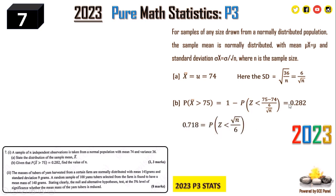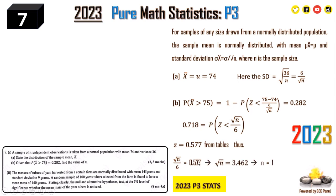Bringing like terms together: 1 − 0.282 = 0.718, so P(Z < root n / 6) = 0.718. From the Z tables, the value of Z that gives a probability of 0.718 is 0.577. Therefore root n over 6 = 0.577, which gives root n = 3.462 when we cross-multiply, and n = 11.98, which rounds up to 12. So the sample size is n = 12.